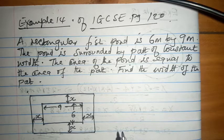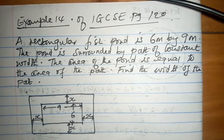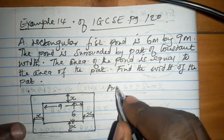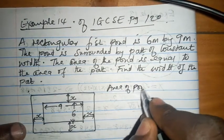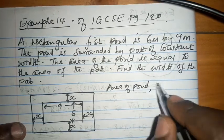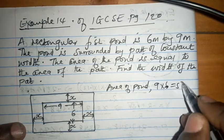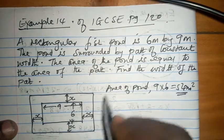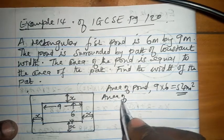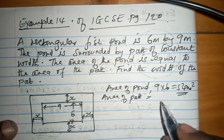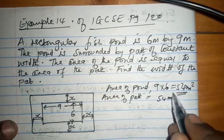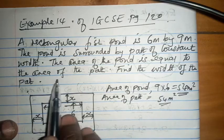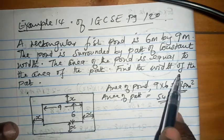The area of the pond is equal to the area of the path, meaning that the area of the pond, which is basically 9 times 6, which is 54 meters squared. And the area of the path is also going to be 54 meters squared, because we are told the area of the pond is equal to the area of the path. Find the width of the path.